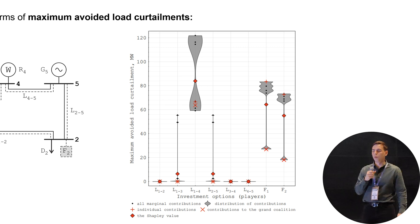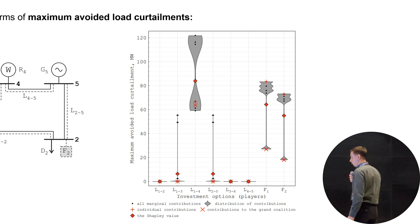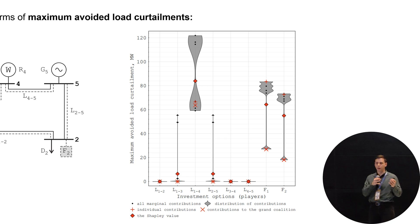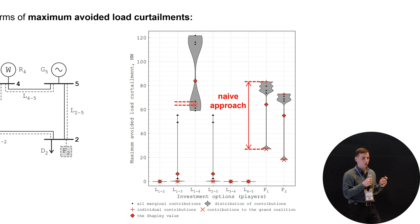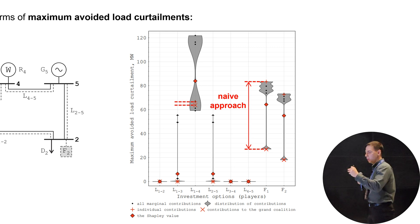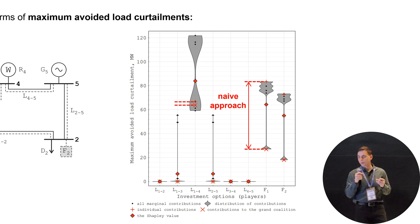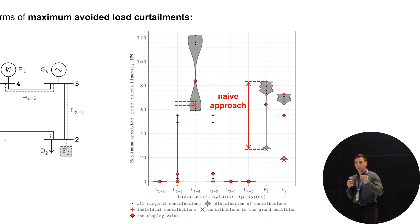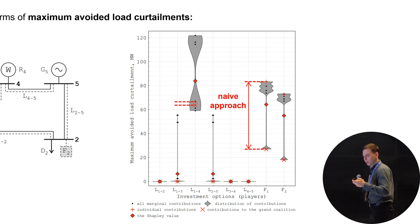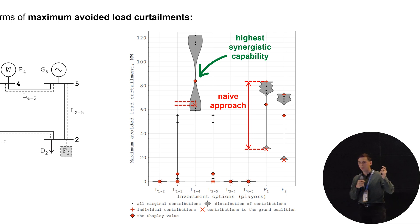You may have a question: why do we need all of these complex simulations? Why can't we just solve the model two times — first with all investments and then just exclude one line? In the paper, we explain why this naive approach will not work. In this figure, I did this for you. You can see the range between the red markers — the range between these simple solutions with and without the line. If we compare these results, it may seem that investment in flexibility at bus one is better because it brings higher contributions, and investments in line 1-4 are not that great. But if we estimate all possible combinations and synergies of investments, we realize that line 1-4 is actually better — its weighted average sum of contributions is higher. So this option has the highest synergistic capability.